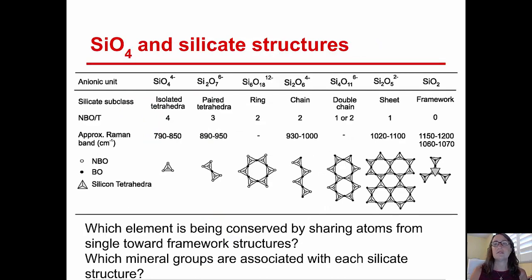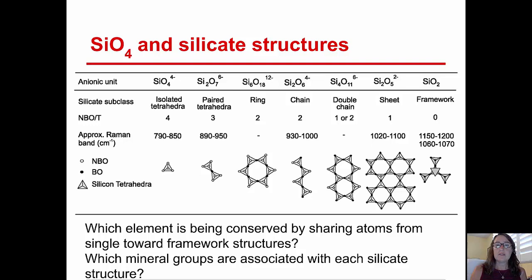Speaking of rock-forming minerals in Earth's crust, let's turn to the silicates. Silicon and oxygen make up the majority of Earth's crust minerals, and those make up the silicates. Silicate structures form around the basic silicon-oxygen tetrahedron, which is SiO4. You'll notice that SiO4 carries a negative 4 charge, so it's very happy to have metals bonding with it to make that charge imbalance neutral.